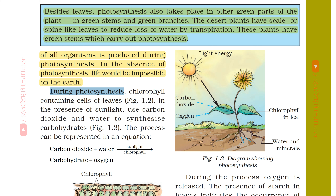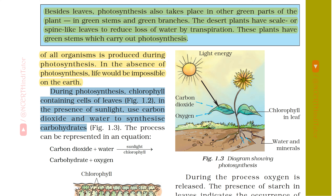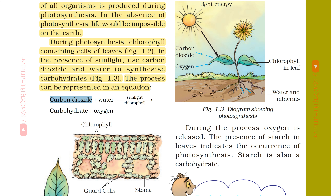During photosynthesis, chlorophyll-containing cells of leaves, in the presence of sunlight, use carbon dioxide and water to synthesize carbohydrates. The process can be represented in an equation: carbon dioxide plus water, under the presence of sunlight and chlorophyll, gives carbohydrate and oxygen.